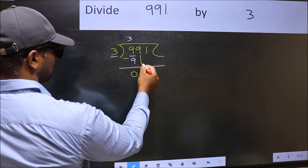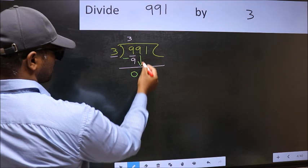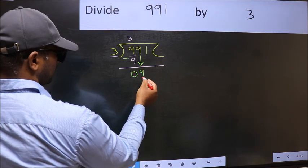After this, bring down the beside number. So 9 down. Now 9.